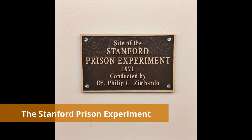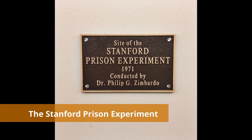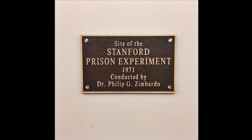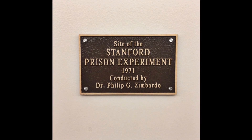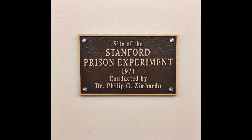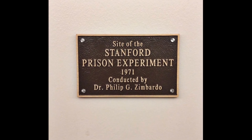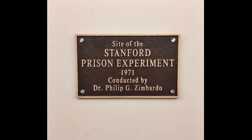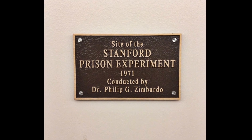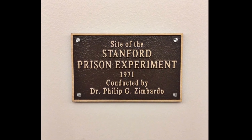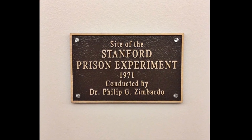The Stanford Prison Experiment was a study in social psychology that investigated the psychological effect of power. It took place at Stanford University, California, on the 14th to the 20th of August, 1971.